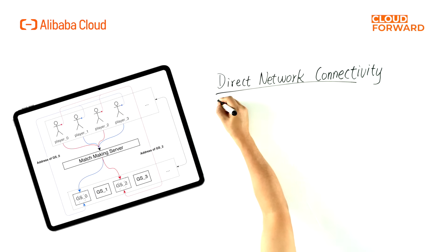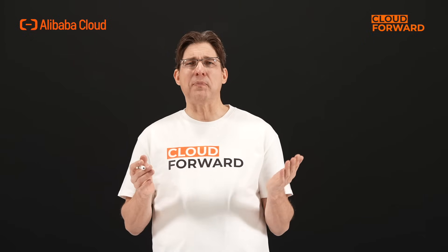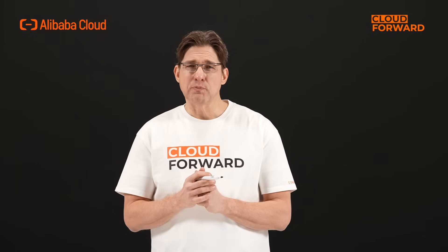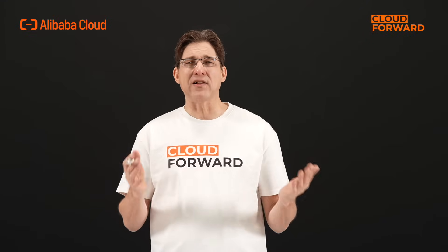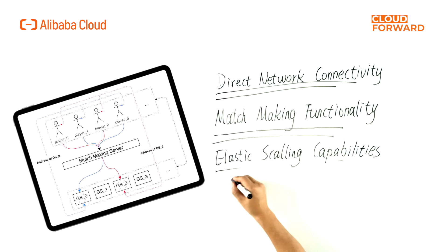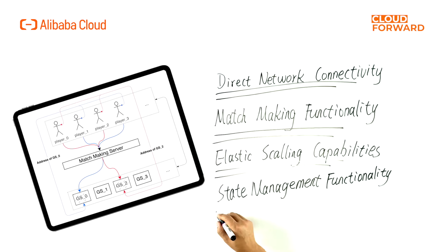Based on these characteristics, an ideal cloud-native architecture for session-based games should have the following capabilities: 1. Provide direct network connectivity by assigning independent public network access addresses for each room, allowing players to connect directly. 2. Provide game matchmaking functionality to find suitable teammates and opponents and allocate appropriate game rooms. 3. Provide elastic scaling capabilities to automatically request and release infrastructure resources based on peak and off-peak demands to control costs. 4. Provide state management functionality to automate the business state and lifecycle of game rooms. 5. Efficient game delivery and operation management with a high degree of automation.